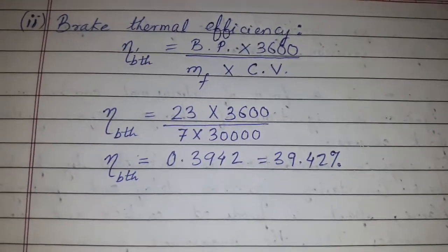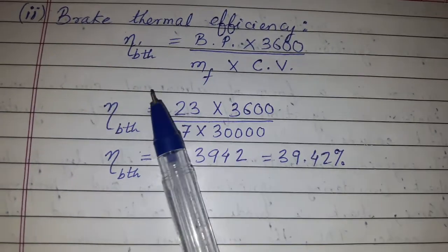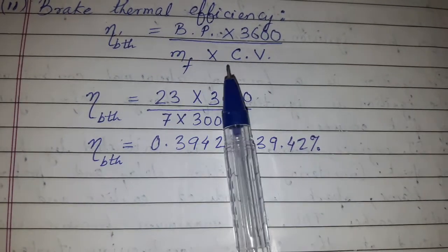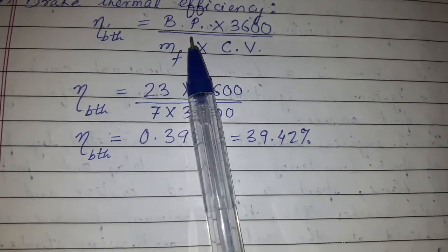Now we'll calculate brake thermal efficiency. The formula is: η_bth = (BP × 3600) / (MF × CV). BP is 23 kW.